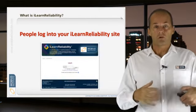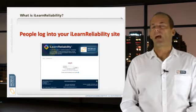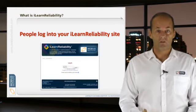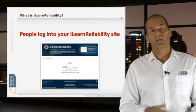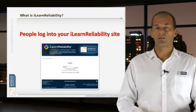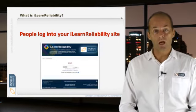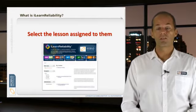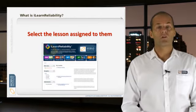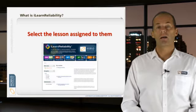So once you've got your accounts, people just come to your iLearn Reliability site. If you have difficulty at your location with a very slow internet, we have another way — you can either download the content or get it on CD. Basically, a person comes to the iLearn Reliability site, logs in, and they will see a page set up just for them. It may just have one lesson or one course to go into, or it could have a lot of content there.